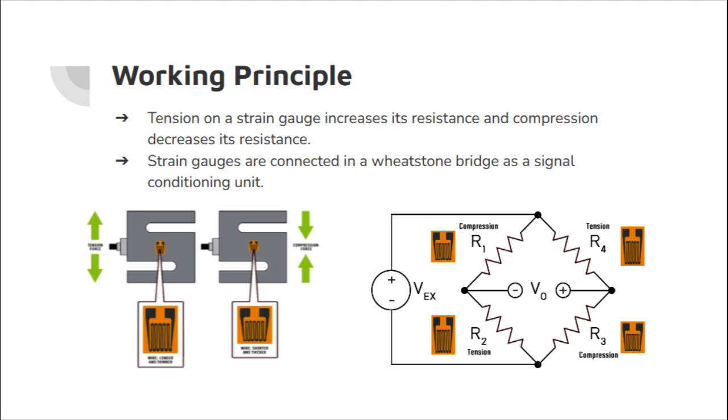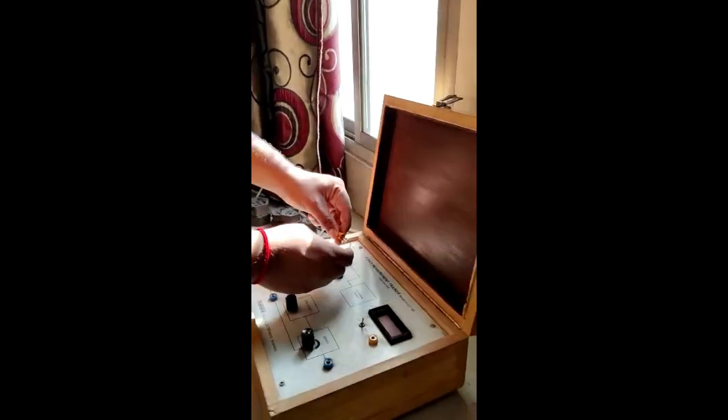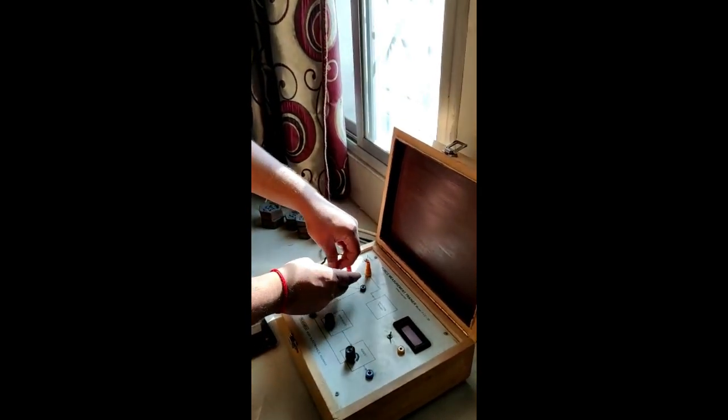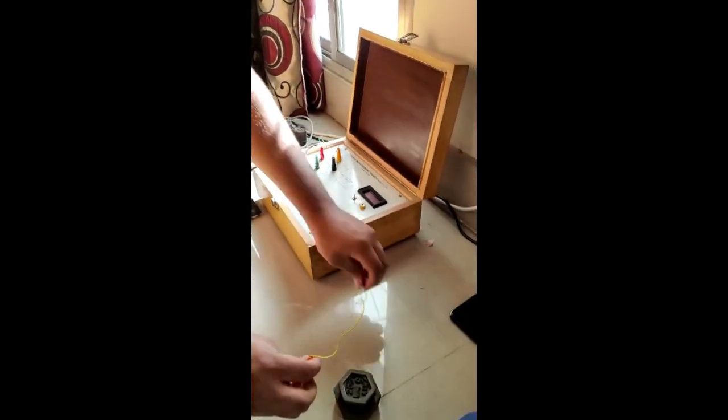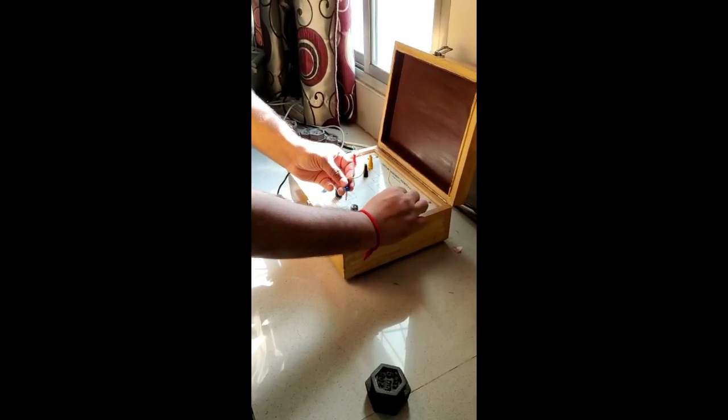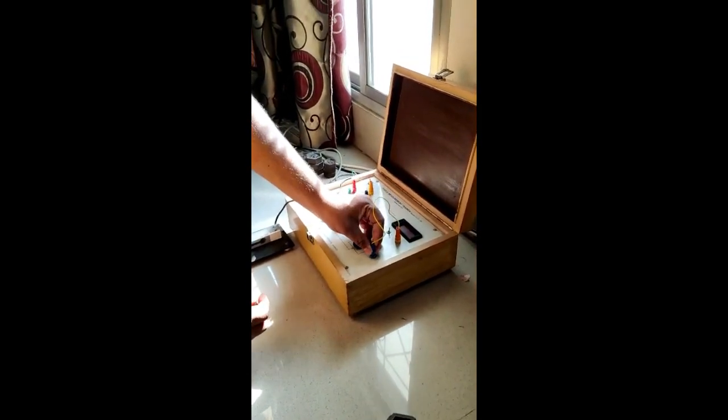Next, we will see how to perform our experiment in the lab. So here we have our force measurement trainer kit. And now we connect our weighing plate to the wheatstone bridges as shown and this circuit has an instrumentation amplifier whose output then goes to a digital voltmeter.